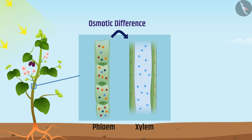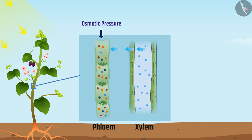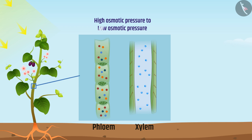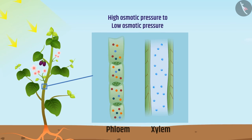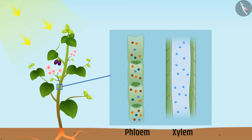This creates an osmotic difference between xylem and phloem. To reduce this difference, water enters from xylem to phloem, increasing the osmotic pressure in the phloem. Water and soluble products then move from high osmotic pressure to low osmotic pressure and are transported to different locations such as storage organs, fruits, and buds. Keep in mind — phloem carries substances both in upward and downward directions, whereas xylem carries only in the upward direction.